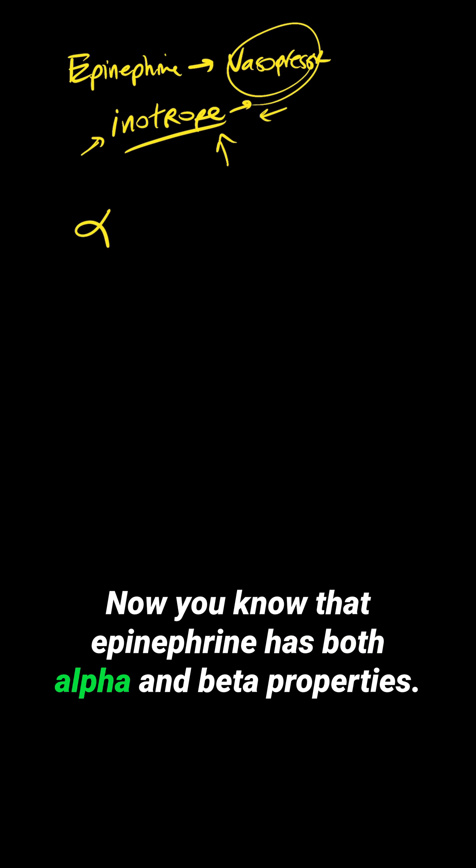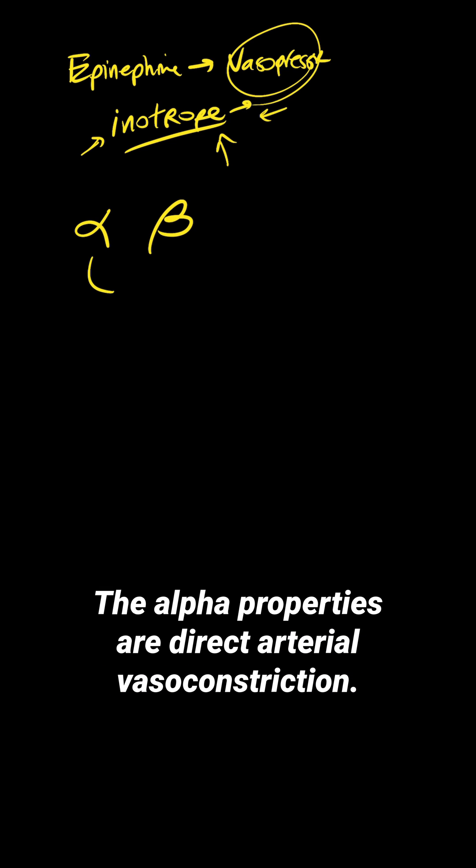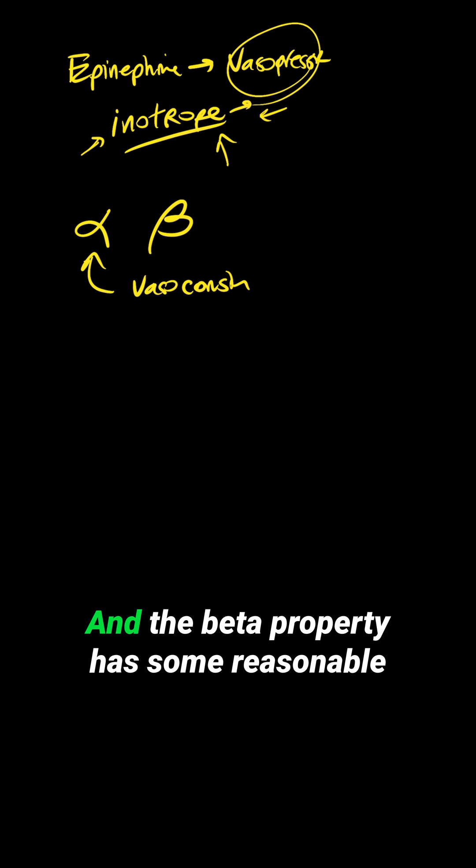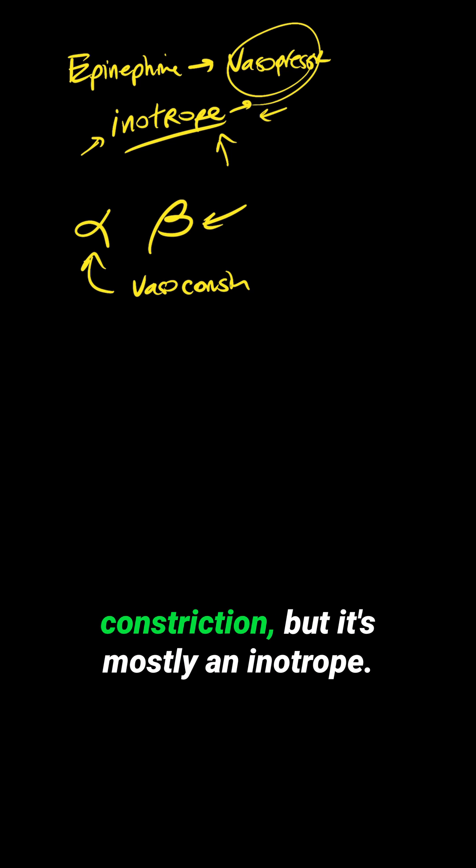Now you know that epinephrine has both alpha and beta properties. The alpha properties are direct arterial vasoconstriction, and the beta properties has some vasoconstriction but is mostly an inotrope.